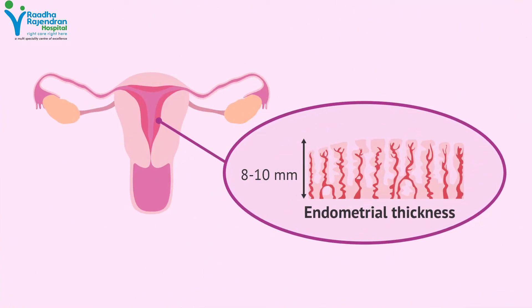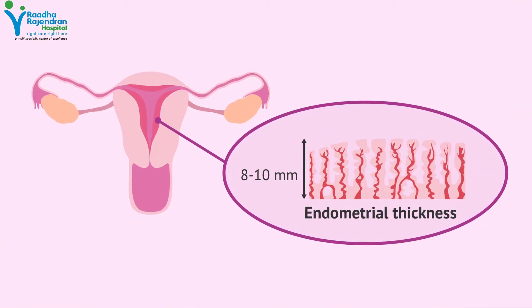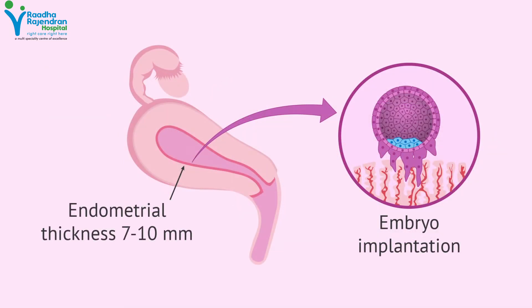Once the follicle is mature, a trigger injection is given, or sometimes it may rupture on its own. Once it has ruptured, the couple is advised to have intercourse, or if it is an IUI cycle, the IUI procedure is timed to the rupture.